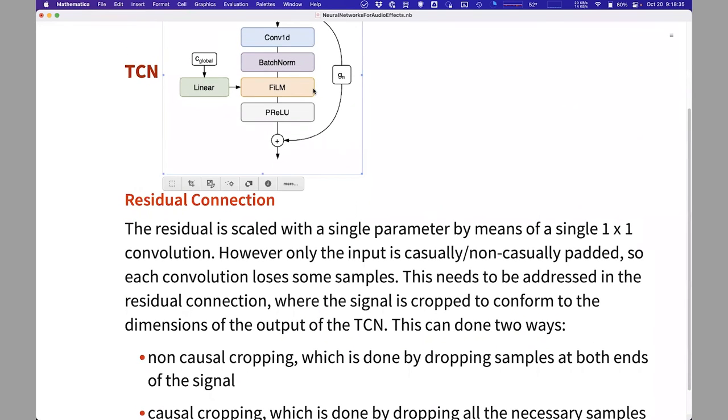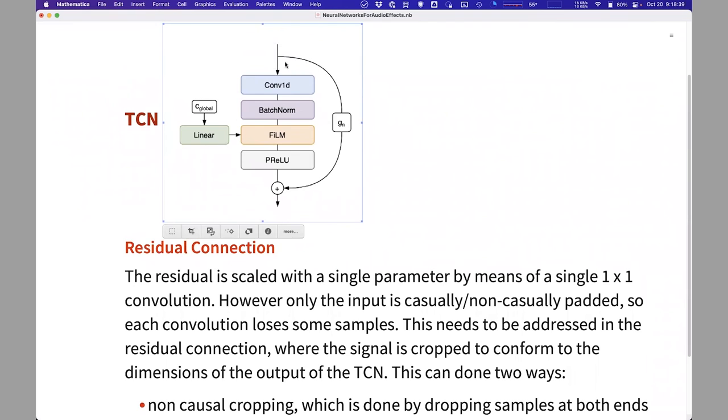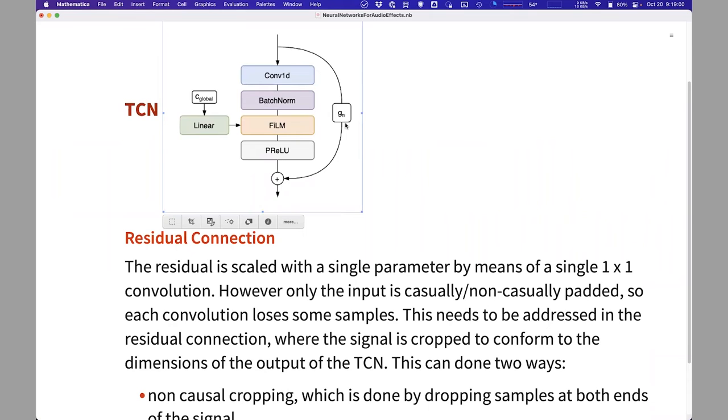And the last ingredient in the TCN is this residual connection. The input to the TCN is then passed, bypassing all of the layers there. A simple scaling is performed by means of a single one-by-one, one-dimensional convolution. So that's just a scaling parameter. It doesn't do any weird stuff.